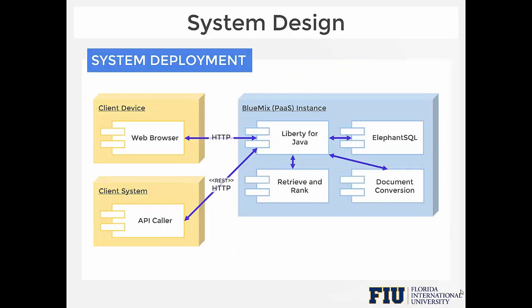System Design: Our system is built and hosted on IBM Bluemix cloud server and written in Java using Liberty profile as runtime. The Watson Retrieve and Rank and document conversion services are used for indexing, machine learning, and document conversion. ElephantSQL is used as the database hosting service.